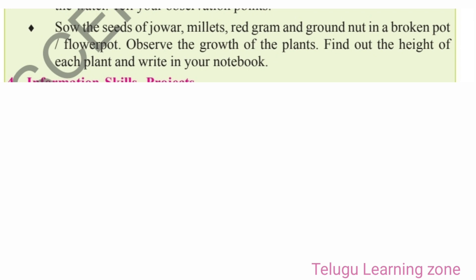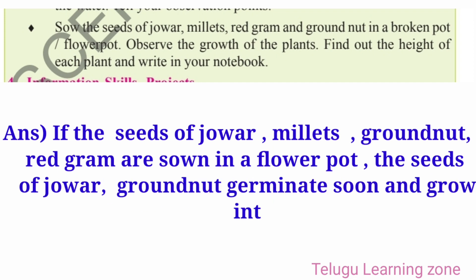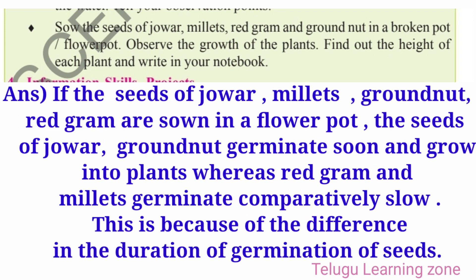Sow the seeds of jowar, millets, red gram and groundnut in a broken pot or flower pot. Observe the growth of the plants. Find out the height of each plant and write in your notebook. Answer: If the seeds of jowar, millets, groundnut, red gram are sown in a flower pot, the seeds of jowar and groundnut germinate soon and grow into plants, whereas red gram and millets germinate comparatively slow.